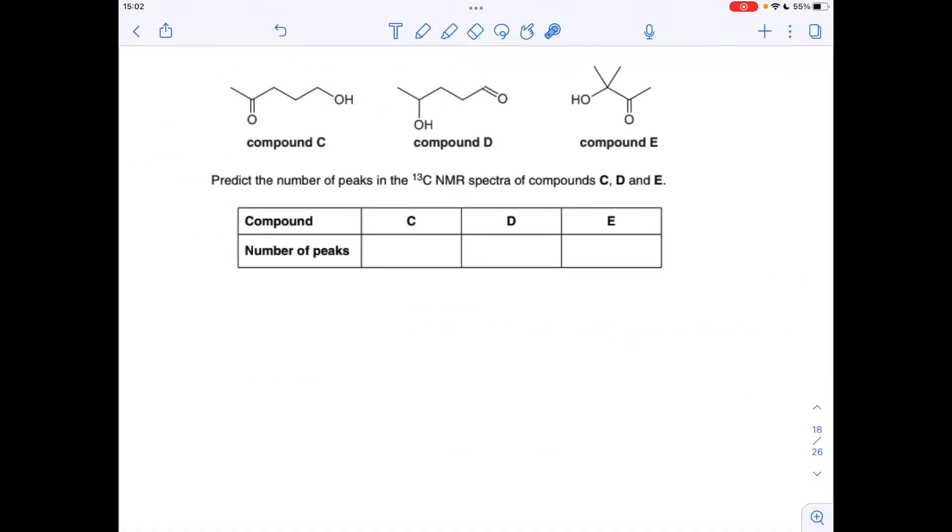Okay, so the first one, we've got to establish the number of different carbon environments in each of these compounds, and obviously that will equate to the number of peaks in the carbon-13 NMR spectrum. So, compound C, all of the carbons are in different environments, so we'd see 1, 2, 3, 4, 5 peaks.